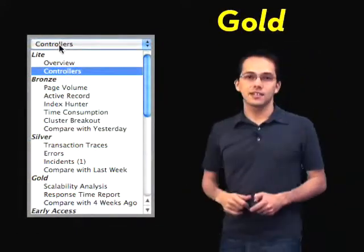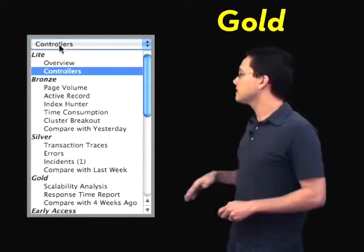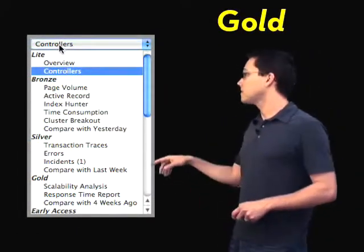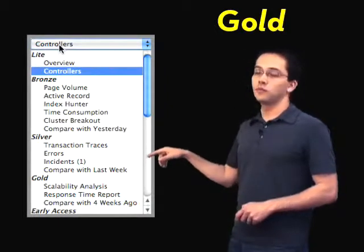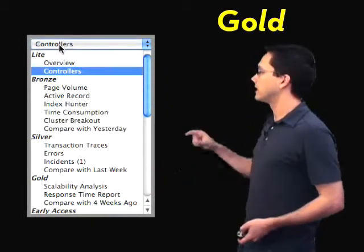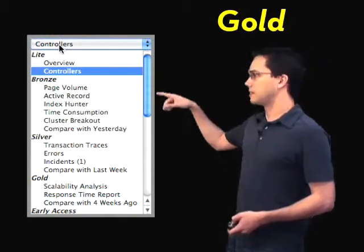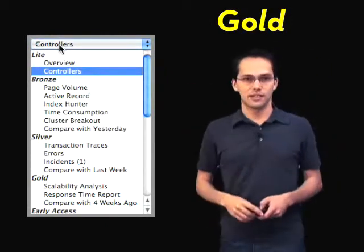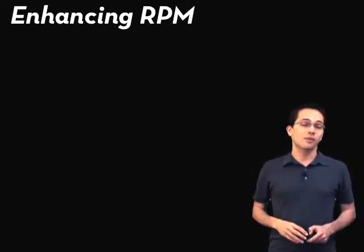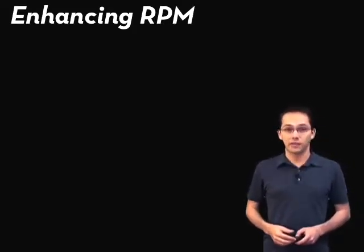The last thing you get access to with the gold tier RPM service is the ability to compare your stats with four weeks ago — also the same sort of thing as last week and yesterday with the bronze tier. Now before we go, I wanted to show you some of the ways that you can configure the RPM service to make it work even better for you.